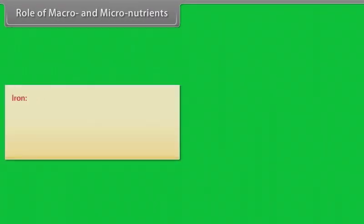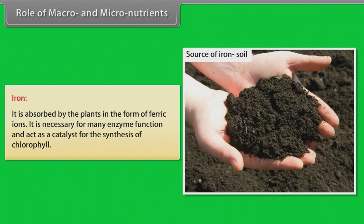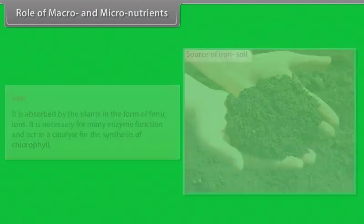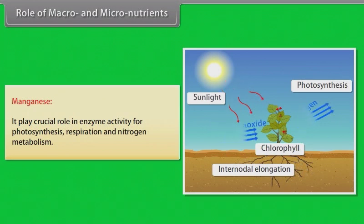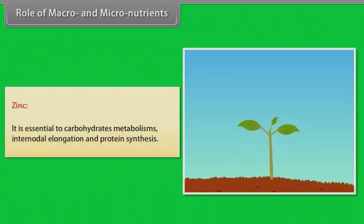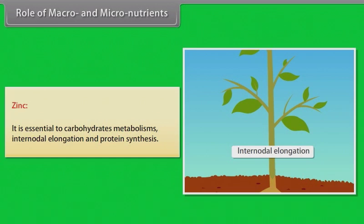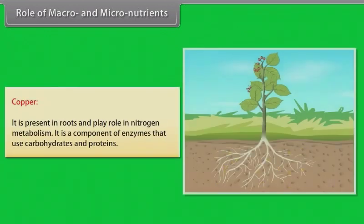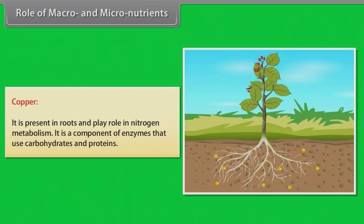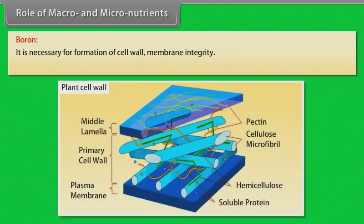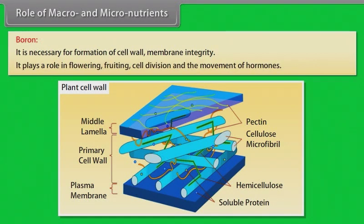Iron: it is absorbed by plants in the form of ferric ions. It is necessary for many enzyme functions and acts as a catalyst for the synthesis of chlorophyll. Manganese: it plays a crucial role in enzyme activity for photosynthesis, respiration and nitrogen metabolism. Zinc: it is essential for carbohydrate metabolism, internodal elongation and protein synthesis. Copper: it is present in roots and plays a role in nitrogen metabolism. It is a component of enzymes that use carbohydrates and proteins. Boron: it is necessary for formation of cell walls and membrane integrity, and plays a role in flowering, fruiting, cell division and the movement of hormones.